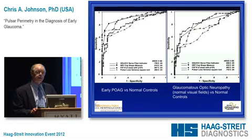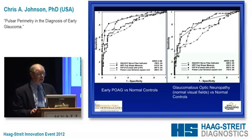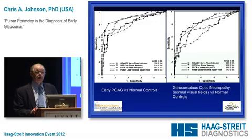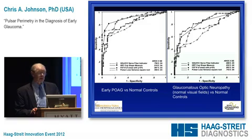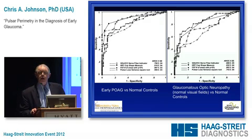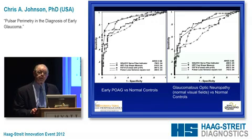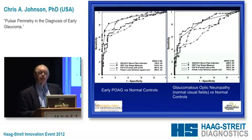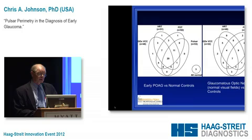We then compared Pulsar to frequency doubling—the Matrix—and also some structural characteristics. These are ROC curves looking at sensitivity and specificity. It performed quite well, at least as well as the Humphrey Matrix frequency doubling perimeter, possibly a little bit better—when looking at glaucoma patients, normals, ocular hypertensives, and a group with glaucomatous optic neuropathy but normal standard visual fields. Frequency doubling and Pulsar showed very similar results with a lot of overlap.